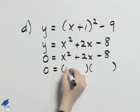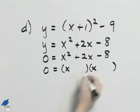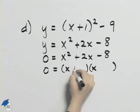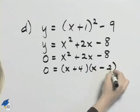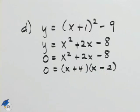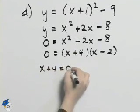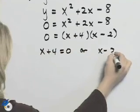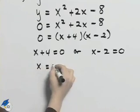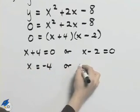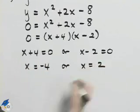x squared plus 2x minus 8 factors into x plus 4, x minus 2. Now using the zero factor property we can split this up into x plus 4 equals 0 or x minus 2 equals 0. So x equals negative 4 or x equals 2.